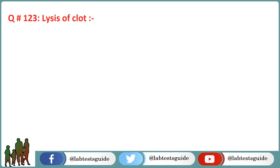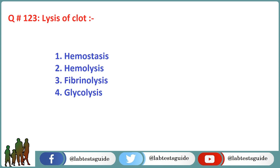The next question is 123: Lysis of clot. Option 1: Hemostasis. Option 2: Hemolysis. Option 3: Fibrinolysis. Option 4: Glycolysis. The correct answer is Option 3: Fibrinolysis.